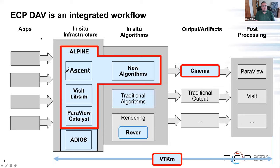This is the tool stack as we envision it. On the left are ECP applications, the next column is ECP infrastructures, with three solid red lines indicating the Alpine, VTKM, and Cinema projects. The Alpine project delivers infrastructure—Ascent will be a major focus of the tutorial, along with ParaView Catalyst. Alpine is also developing new algorithms for in-situ. Cinema will be the second part of the tutorial, and VTKM underpins everything as the approach for making this run on many-core architectures.